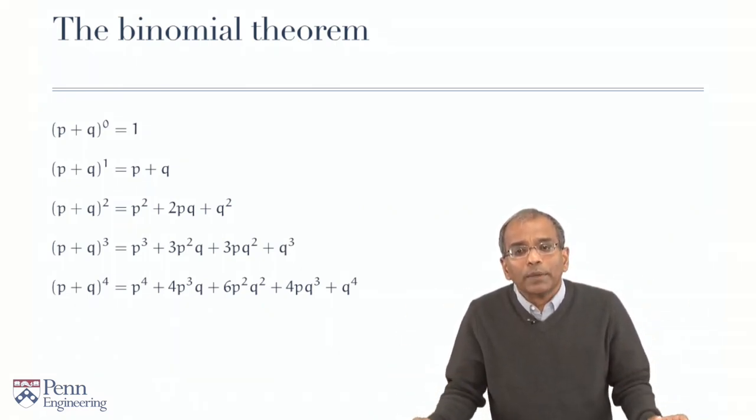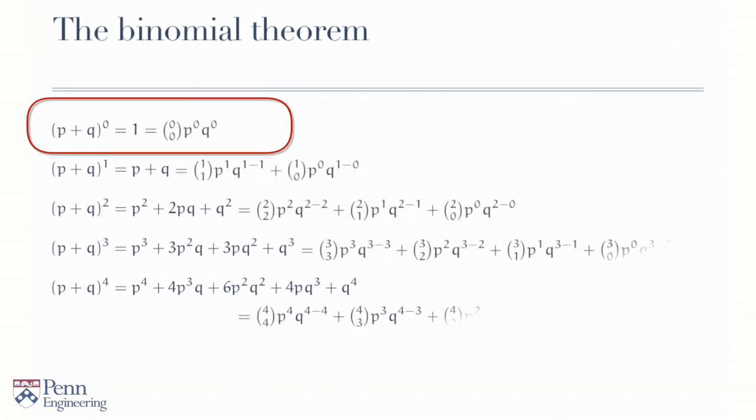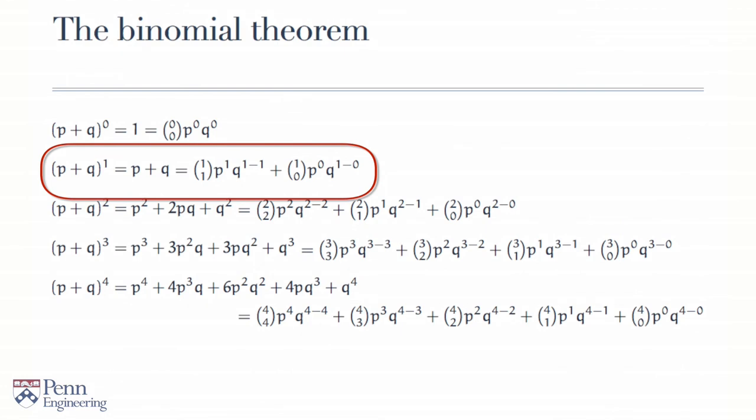The observation is the following. We can write 1 as 0 choose 0, which by definition is 1, times p to the power 0 times q to the power 0. p plus q to the power 1 is p plus q, and we can write that as a sum of two binomial terms, one involving 1 choose 1, one involving 1 choose 0, as you can verify by plugging into the formula.